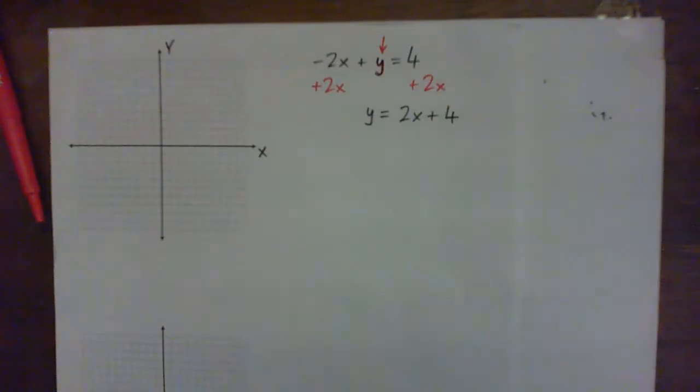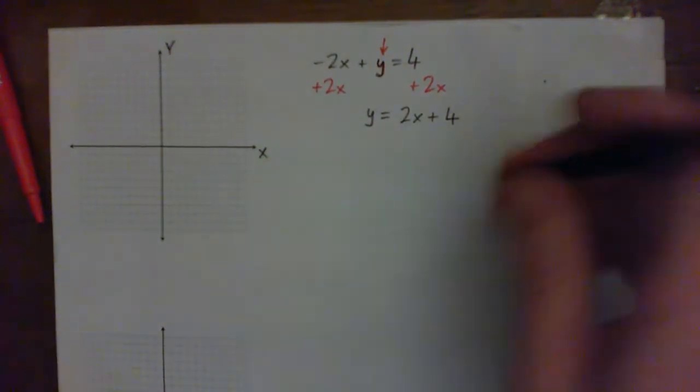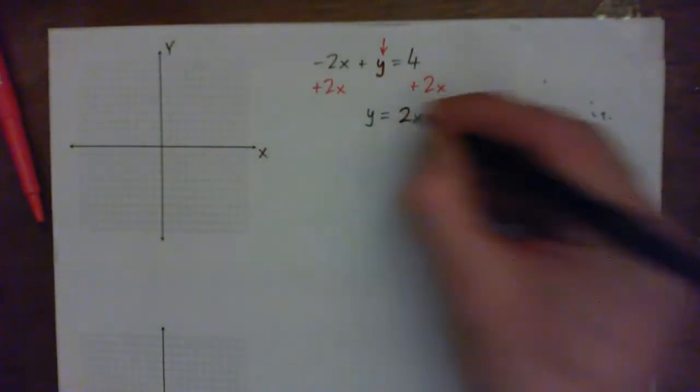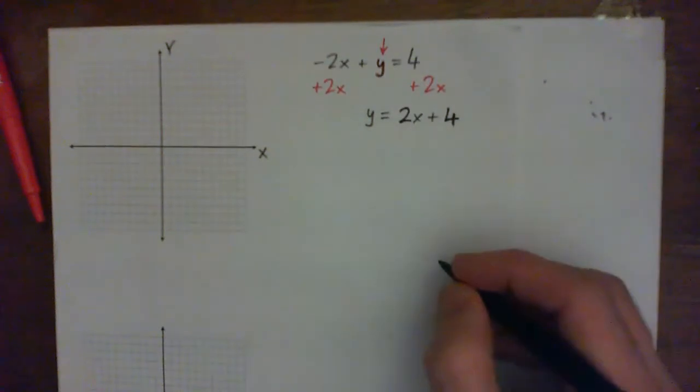It doesn't matter if you write 4 plus 2x or 2x plus 4, but I'm just going to do it this way because now it's in the form of y equals mx plus b, where this is the slope m, and that's the y-intercept b.